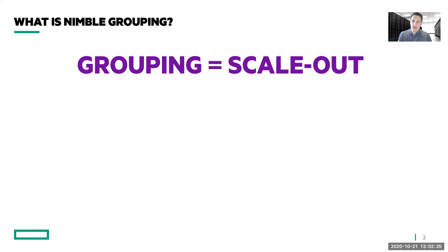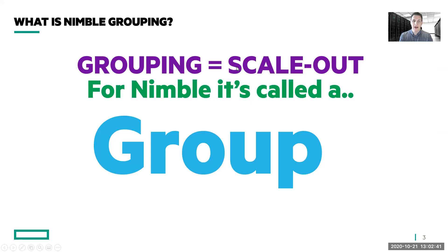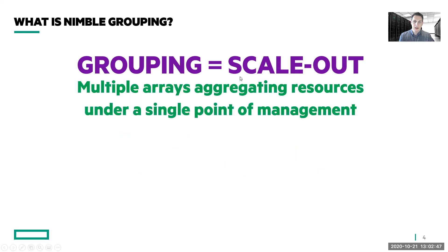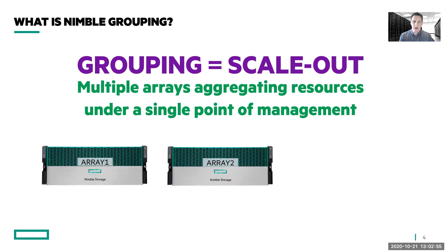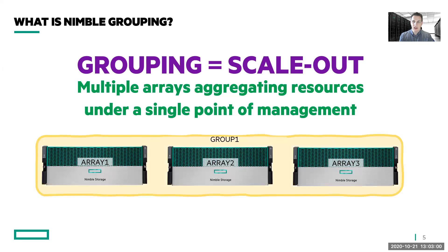Grouping is part of the scale-out functionality that the Nimble storage platform supports. Other terms that might be used would be clustering or federation, but when we're talking about Nimble, we're talking about creating groups. Really what grouping is, is truly scaling out — taking multiple arrays and aggregating resources under a single point of management, basically expanding a management group over multiple systems.